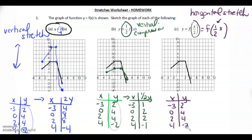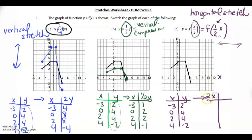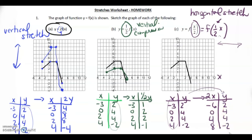Let's write the original table of values. This affects the x's because the x-axis is the horizontal axis, so it affects the x-coordinates. We're stretching by 2, so we put 2x — we use what it's actually doing. So if it's a stretch by 2, it's 2x. Then we copy down our y's. We double every single x-coordinate: negative 6, 0, double of 2 is 4, and double of 4 is 8. The y-coordinates stay as 2, 4, 4, negative 2.